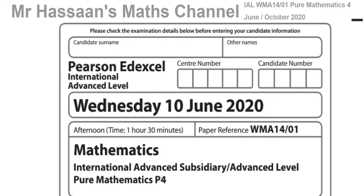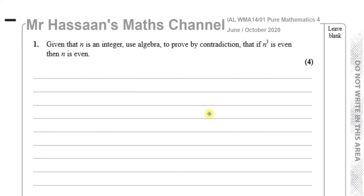For question number 1, we have something which is new to P4 in the new syllabus, which is proof by contradiction. In this question it says: given that n is an integer, use algebra to prove by contradiction that if n cubed is even, then n is even.